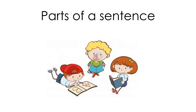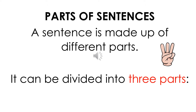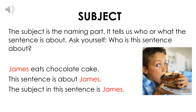A sentence is made up of different parts. It can be divided into three parts. The first part is the subject. The subject is the naming part of the sentence — it tells us who or what the sentence is about.